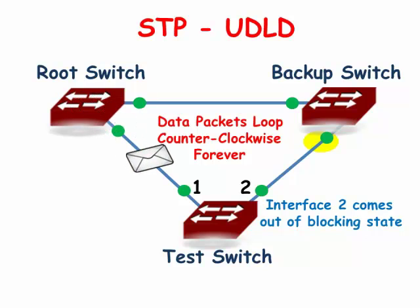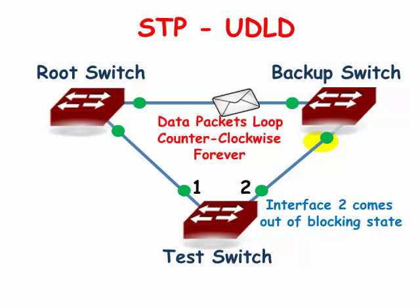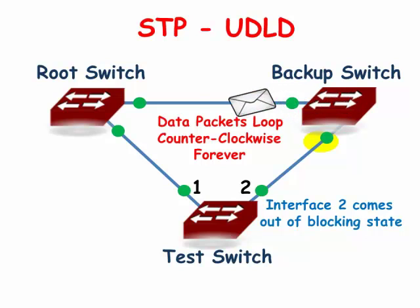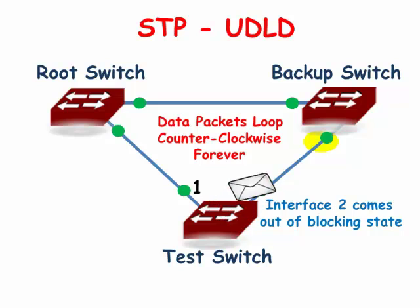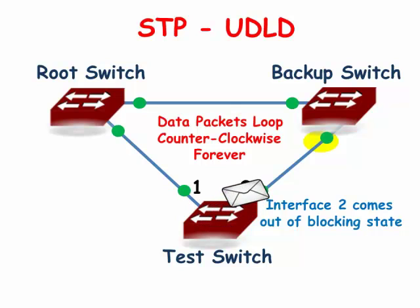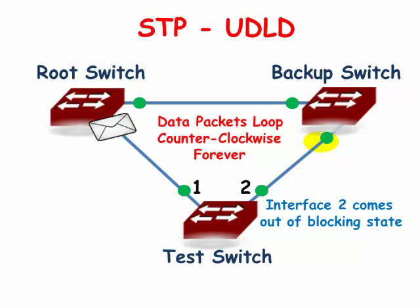Cisco recommends using both UDLD and LoopGuard to protect yourself against spanning tree software issues as well as bad cable connections. UDLD protects from wiring configuration problems while LoopGuard protects against missing BPDUs caused by software problems.